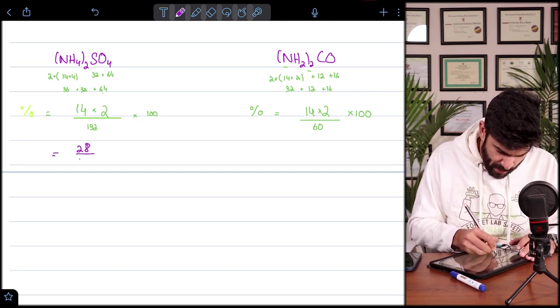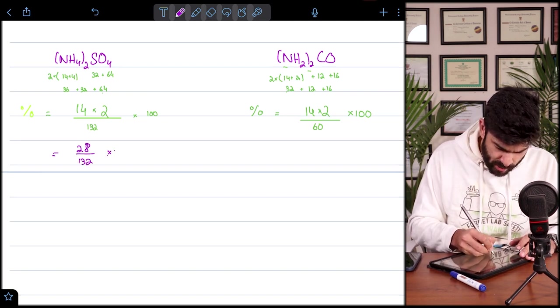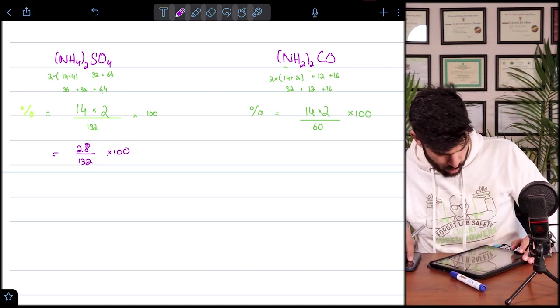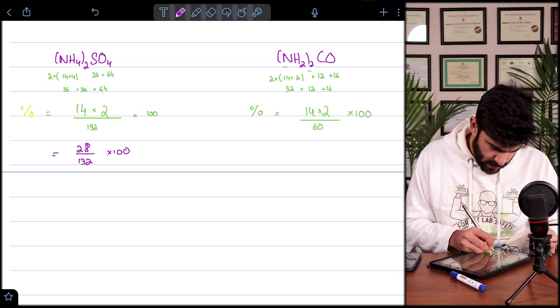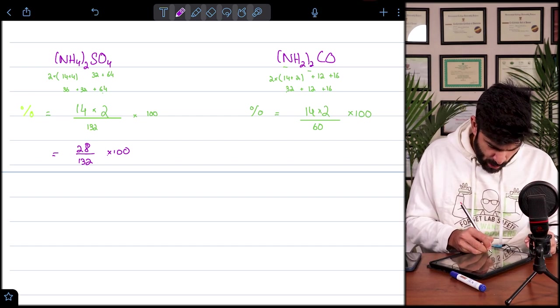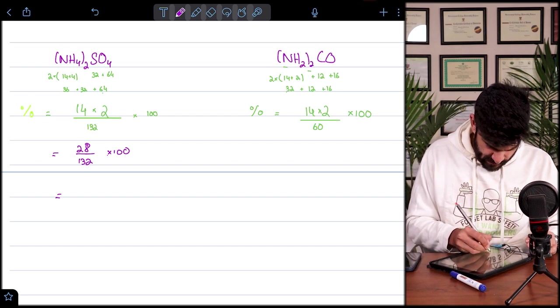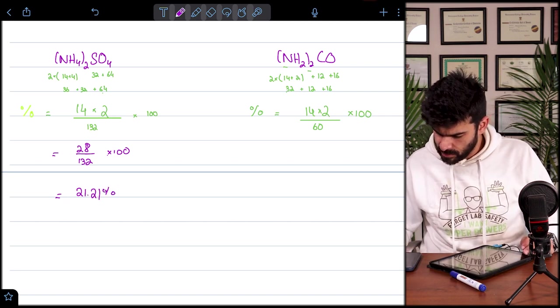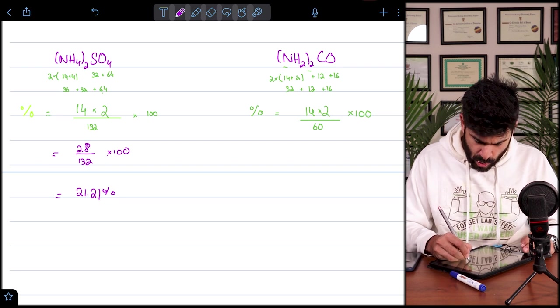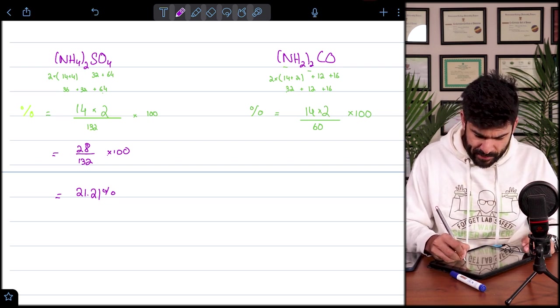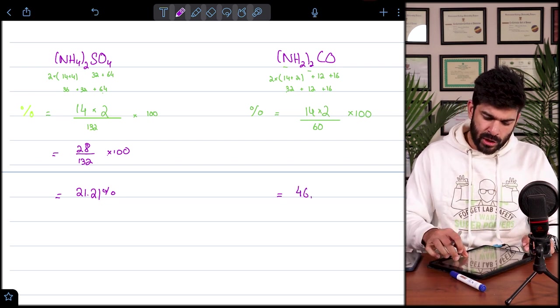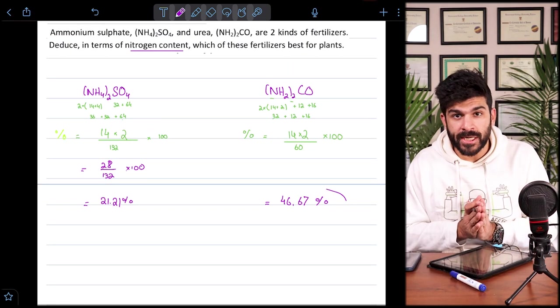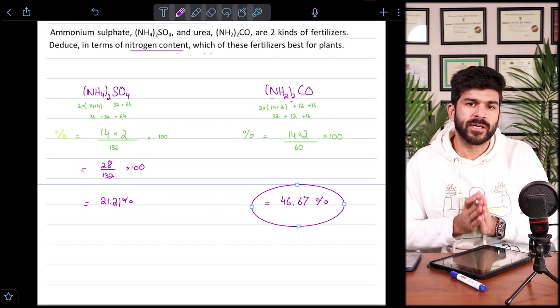And it's pretty evident in looking at the equation. But still let's calculate the final result. 28 divided by 132 into 100. And the answer is 21.21 percent. That's for ammonium sulfate. And for urea, we have 46.67 percent of nitrogen. So therefore, having more percentage of nitrogen in it, urea becomes a better fertilizer. So this is what we know about the percentage composition.